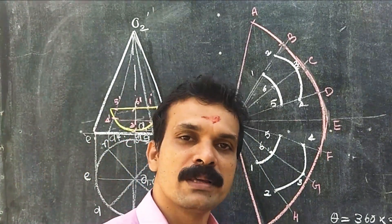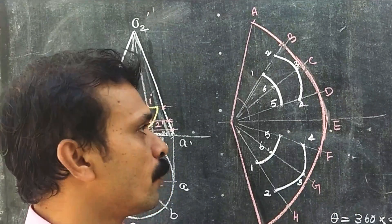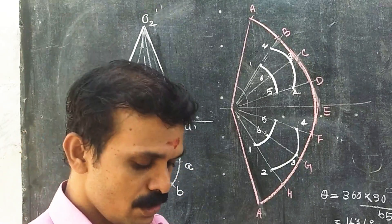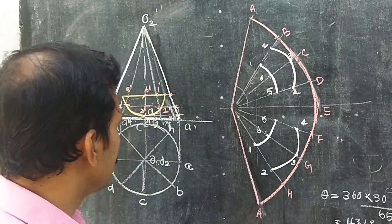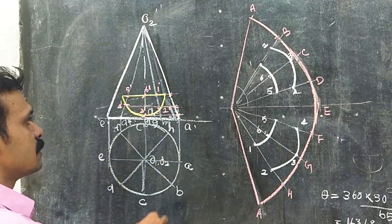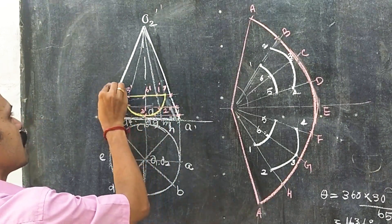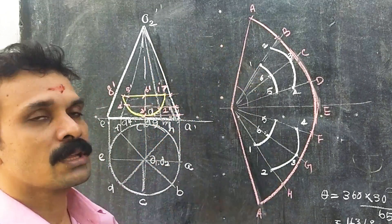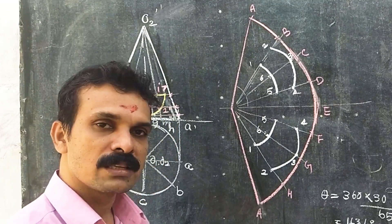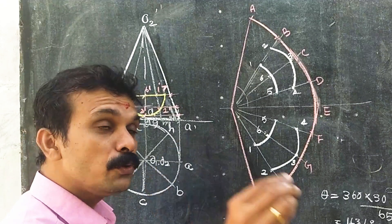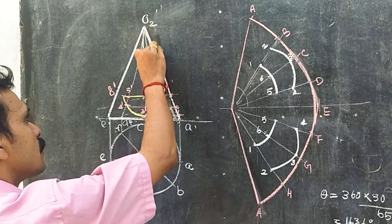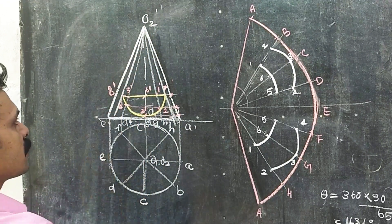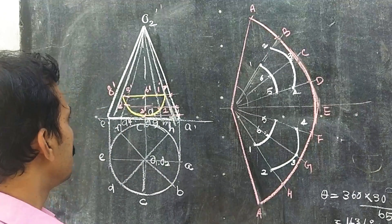This much portion has been completed. Now we have to locate 2 more points — these endpoints. Name this point as 7 dash and this as 8 dash. So, how can we locate 7 and 8 on the development? The step is: draw a new generator through point 7 and another generator through point 8, so that you obtain 2 points on the base.